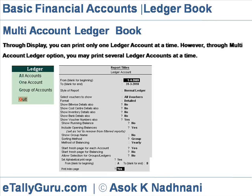All Lasers of an account group: Select a group of accounts and then select the laser account group to print all laser accounts placed under the selected account group in alphabetical order, one after another. On selection of the desired menu item, you get the multi-account printing screen with options similar to display printing. Select the period and the printing options. The format of multi-account laser is similar to laser printed from display.